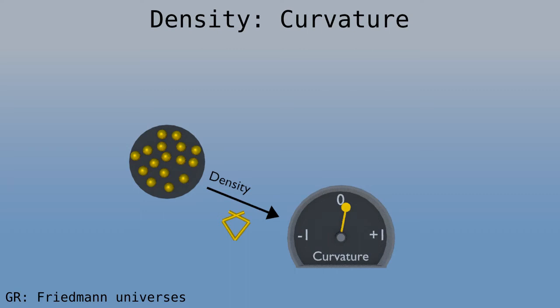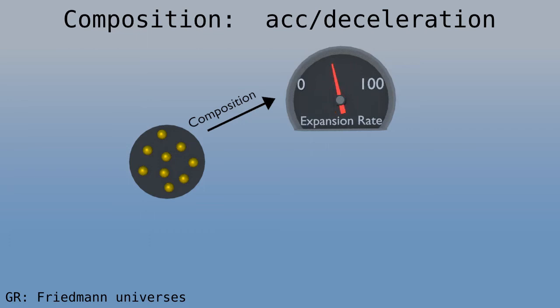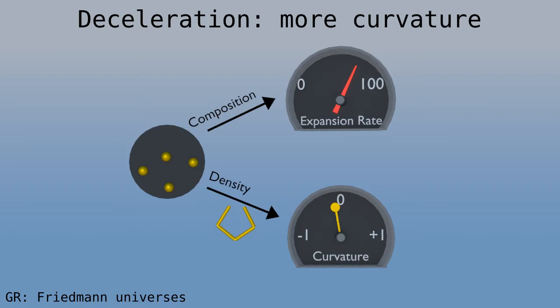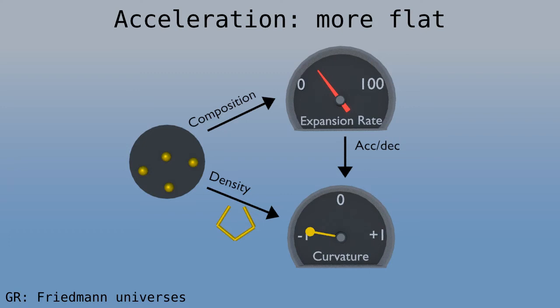There's a lot going on here, so let's try to simplify. First, we saw that the total density of mass and energy causes the curvature to be negative, zero, or positive. It doesn't matter what the composition is, just the total density. The composition does matter for the rate of expansion. With more dark energy, we tend toward acceleration. Finally, with deceleration, the curvature moves away from flat. Look at the two pointers. The opposite happens with acceleration. The universe becomes more flat. And this is true whether the curvature started out slightly negative or slightly positive.